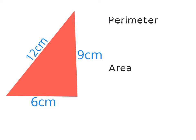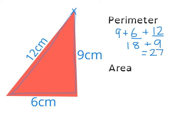Now we're going to look at working out the area and perimeter of a triangle. For the perimeter, the same method applies — it is simply the distance all the way around the shape. So it is 9 plus 6 plus 12. 12 plus 6 is 18, add on the 9, bringing you up to 27 centimeters.